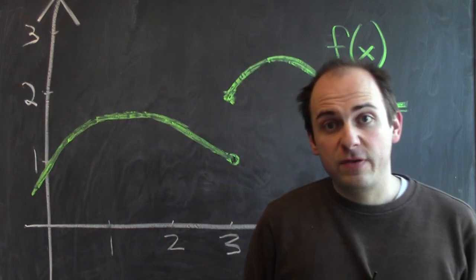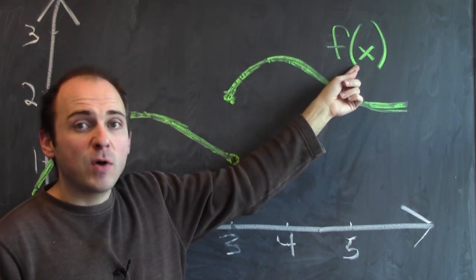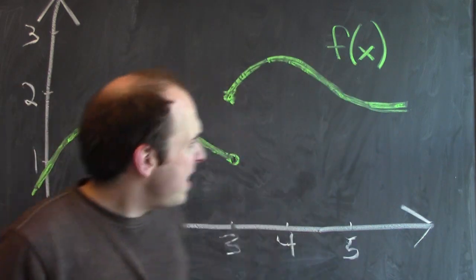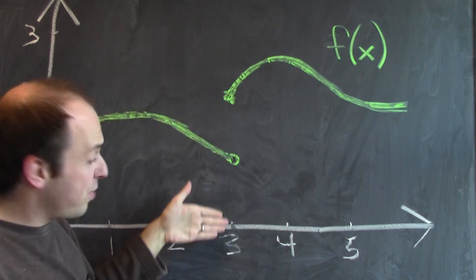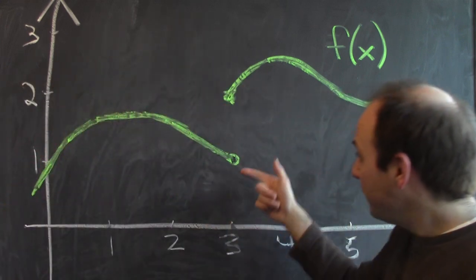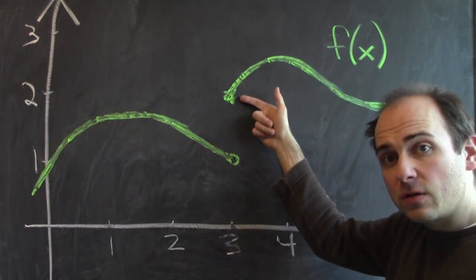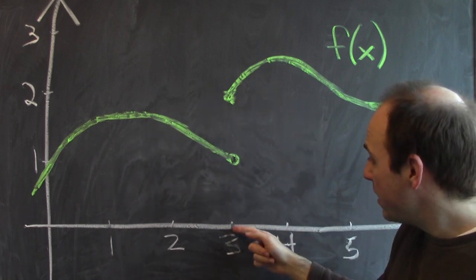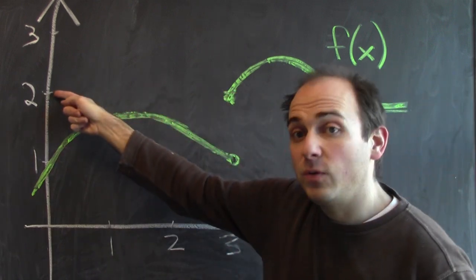It really helps to see a graph. Here's a graph of a made-up function that I'm calling f of x. And you'll note that f has some issues at the input 3. There's an empty circle here and a filled-in circle here, so if I plug in 3, my output value is 2.